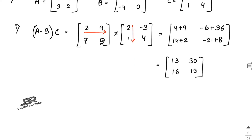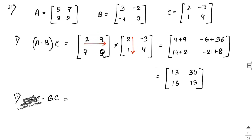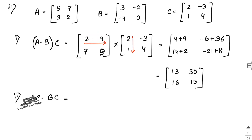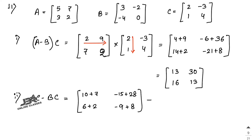For part 2, compute AC minus BC. First, find AC: multiply matrix A with matrix C. First row of A times first column of C: 5×2 + 7×1 = 17. Then 5×(−3) + 7×4 = −15 + 28 = 13. Next row: 3×2 + 2×1 = 8, and 3×(−3) + 2×4 = −9 + 8 = −1. So AC = [17, 13; 8, -1].